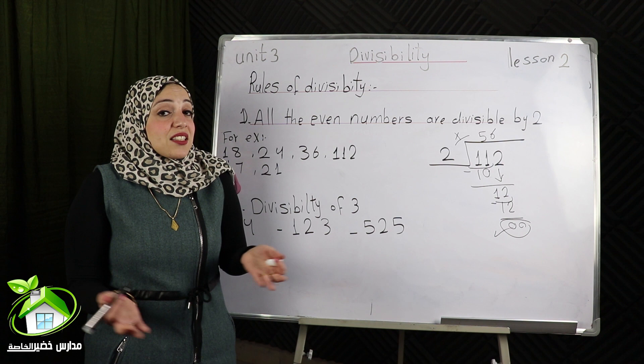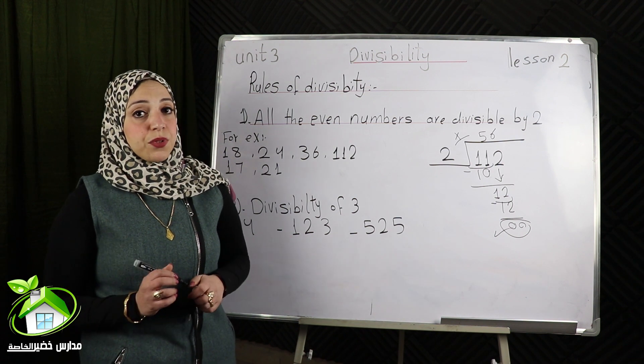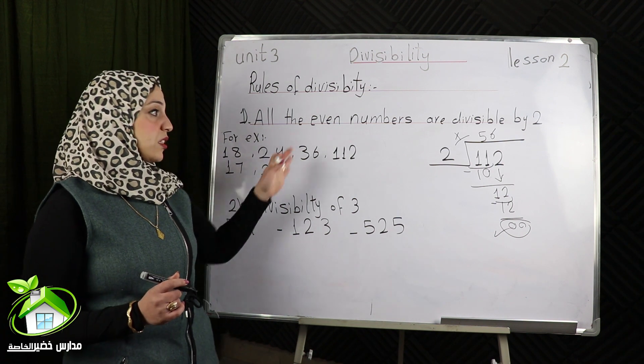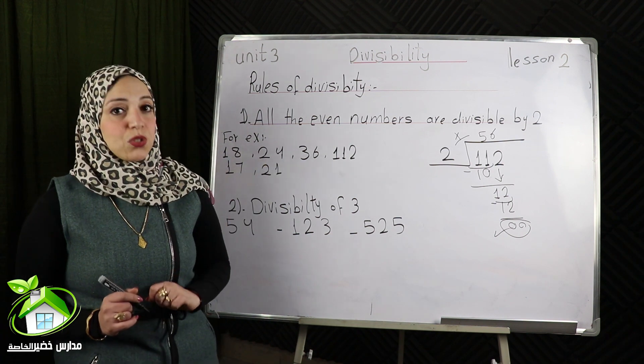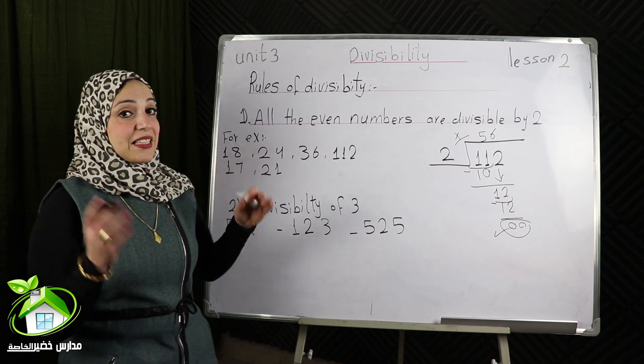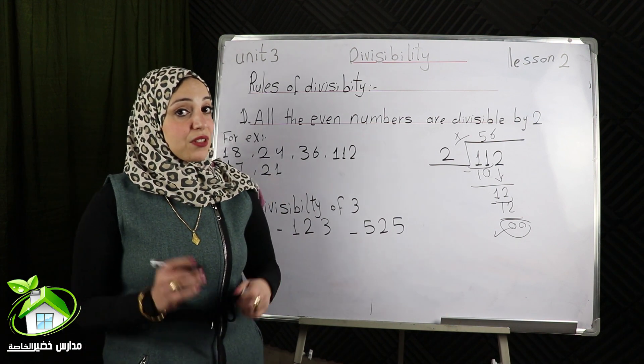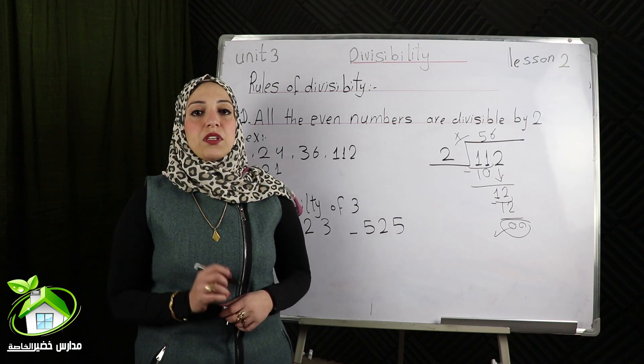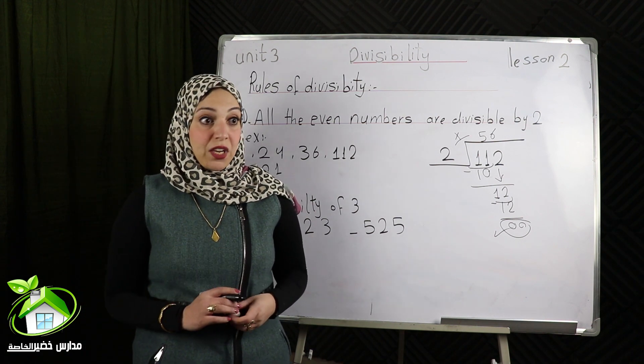17 isn't an even number, so it's not divisible by 2. 51 isn't an even number, so it isn't divisible by 2.